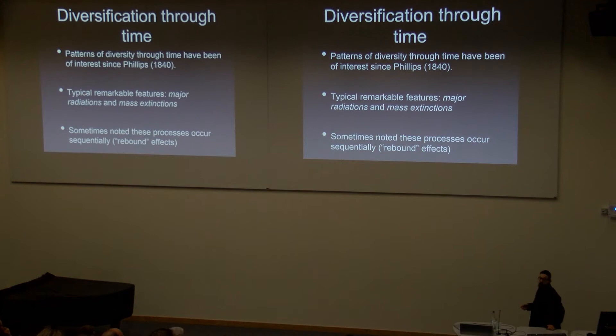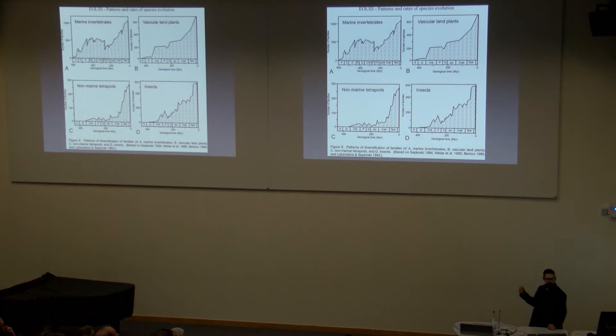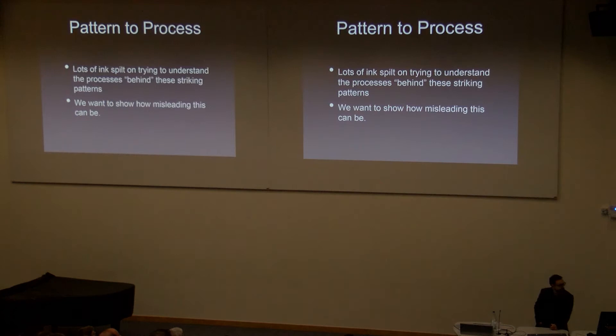It's also been pointed out many times that these two things often go hand in hand. Often after mass extinction, we notice a sort of a rebound effect. And of course, we've got lots of ideas about why that might happen. Here are some pictures, perhaps from Benton, showing typical patterns of diversification through time. And of course, a lot of ink has been spilt trying to understand why we get these very striking patterns.